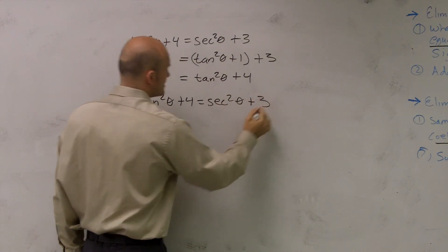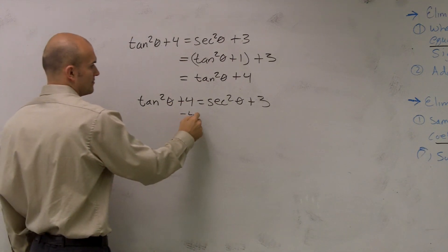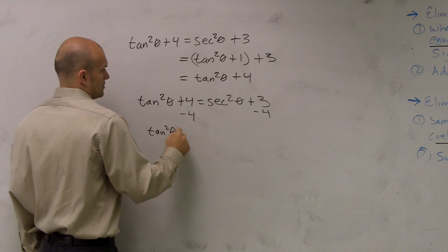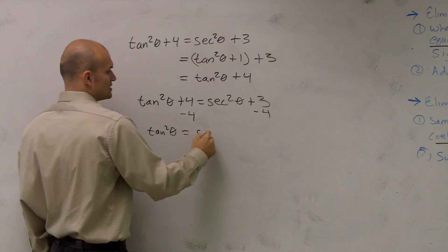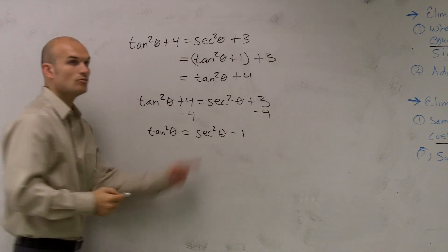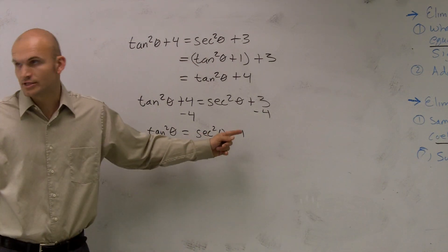What Avi was saying is you could also just put the 4 to the other side. Tangent squared of theta equals secant squared of theta minus 1. Well, what is secant squared of theta minus 1?